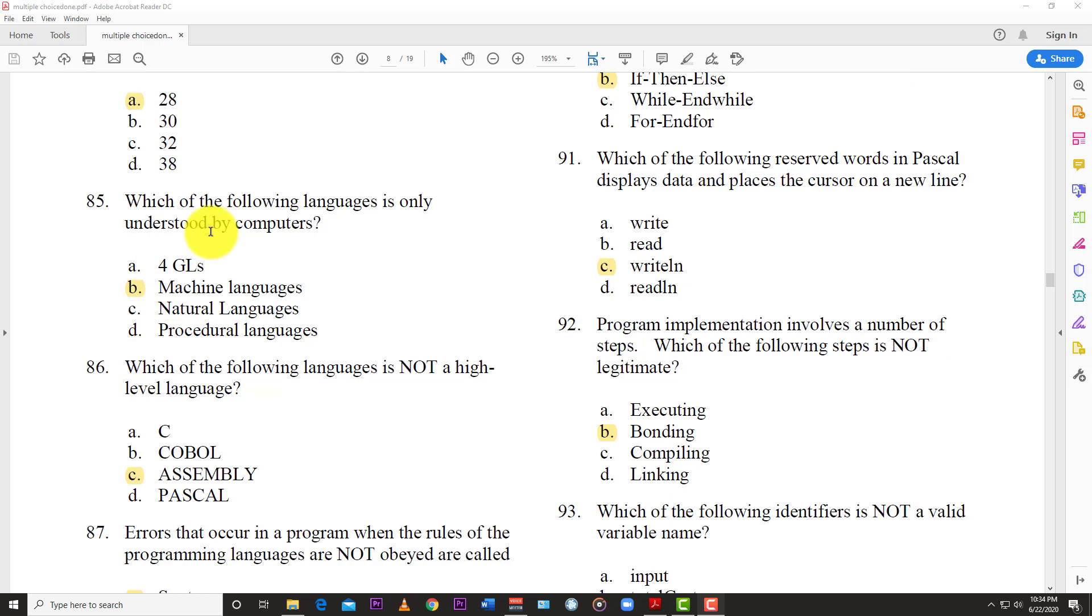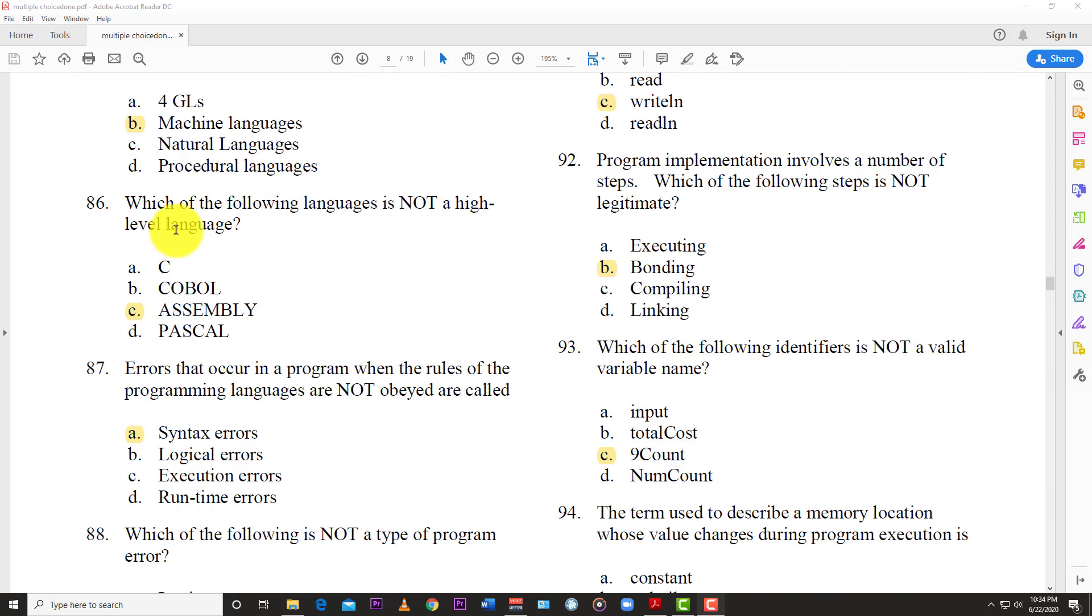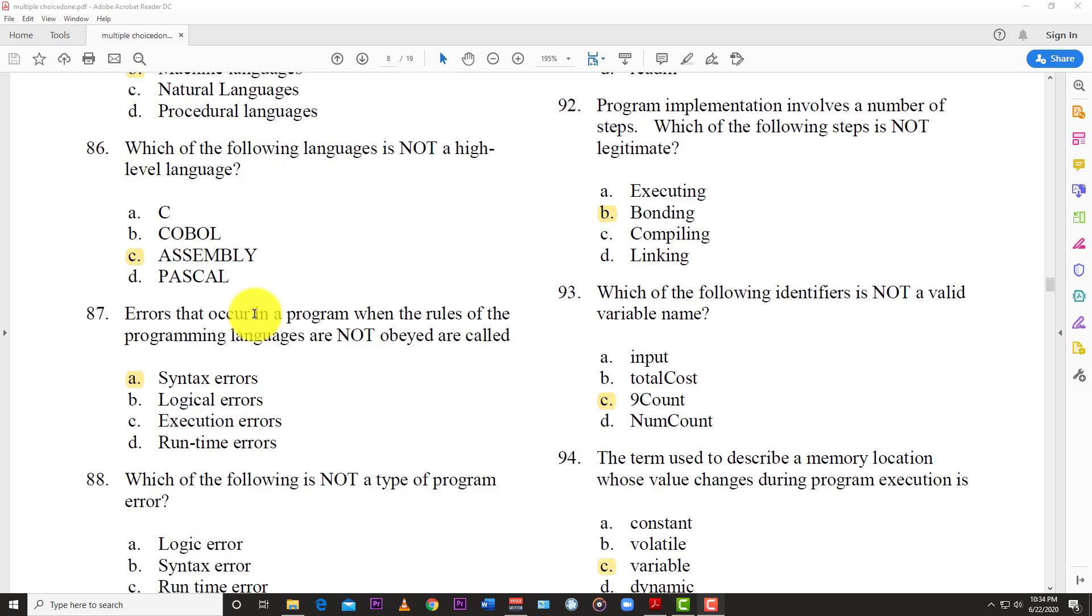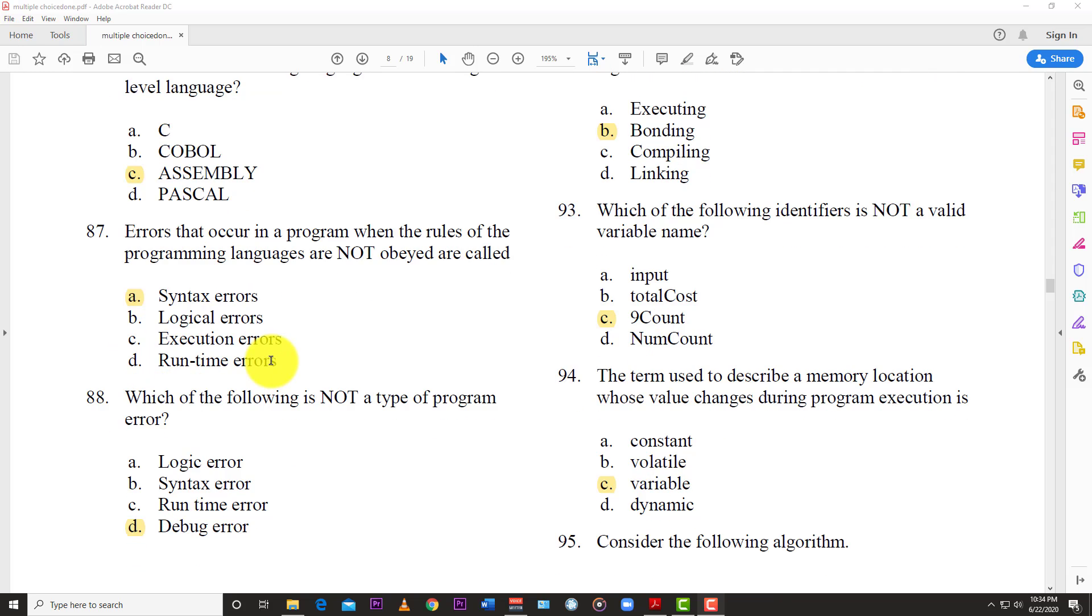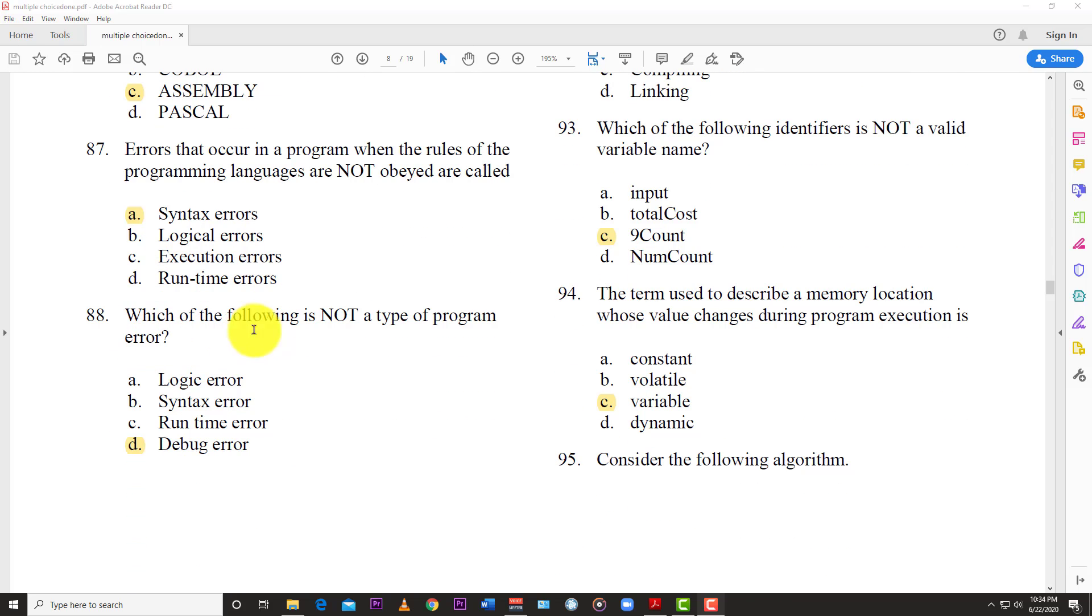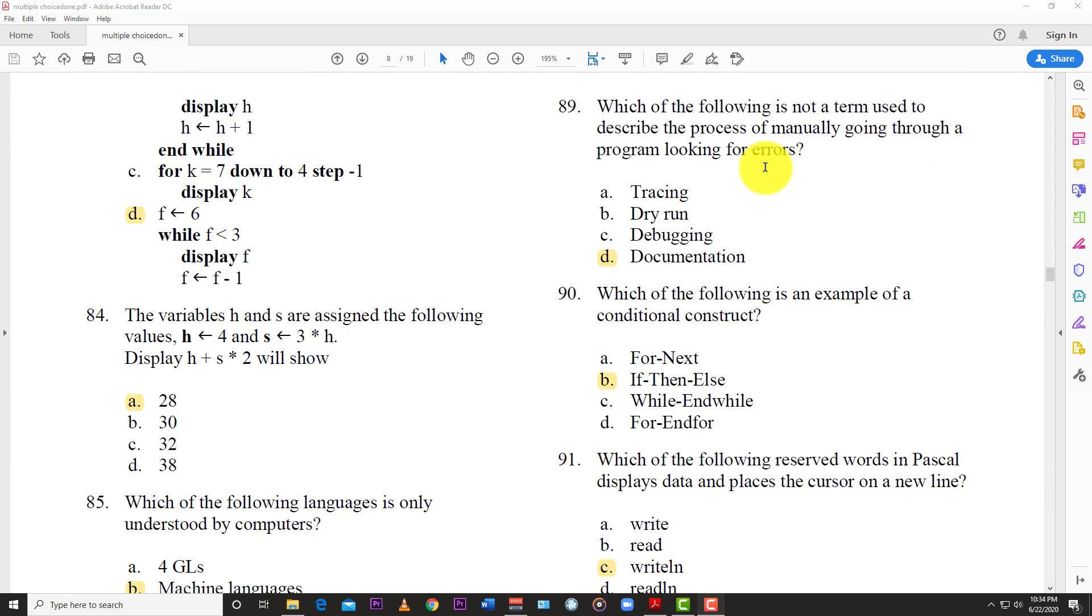Number 85: Which of the following languages is only understood by computers? And the answer here is B, machine languages. And the answer here is C, assembly. Number 87: Errors that occur in a program when the rules of the programming language are not obeyed are called. And the answer is A, syntax errors. Number 85: Which of the following is not a type of program error? The answer here is D, debug error. Number 89: Which of the following is not a term used to describe the process of manually going through a program looking for errors? And the answer here is D, documentation.